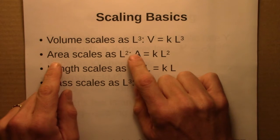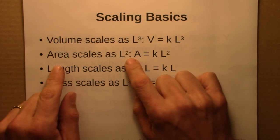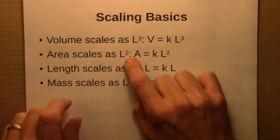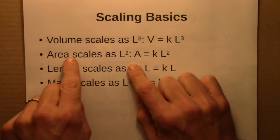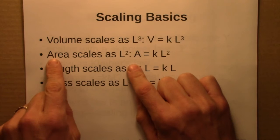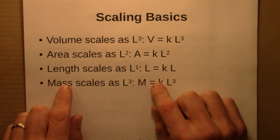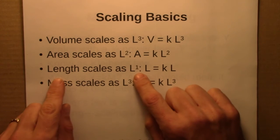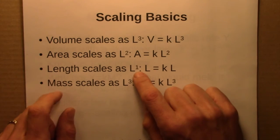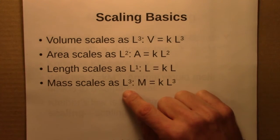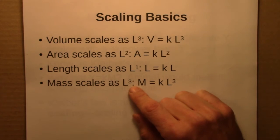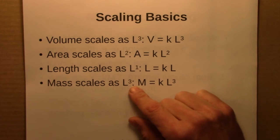Area scales as L squared, because areas are two dimensional — and that includes surface areas, any old area. Length scales as L to the 1, and mass scales as L cubed, because mass is proportional to volume.